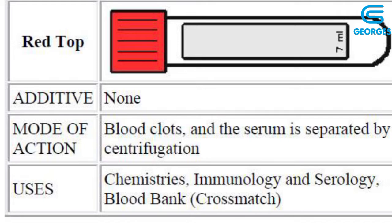The next tube is the red plastic top tube. It can sometimes come plain or with a clot activator in the form of powder. The red top tube can be used to do a variety of tests: BMP, CMP, lipid profile, serological testing, therapeutic drug monitoring, and some blood bank procedures.